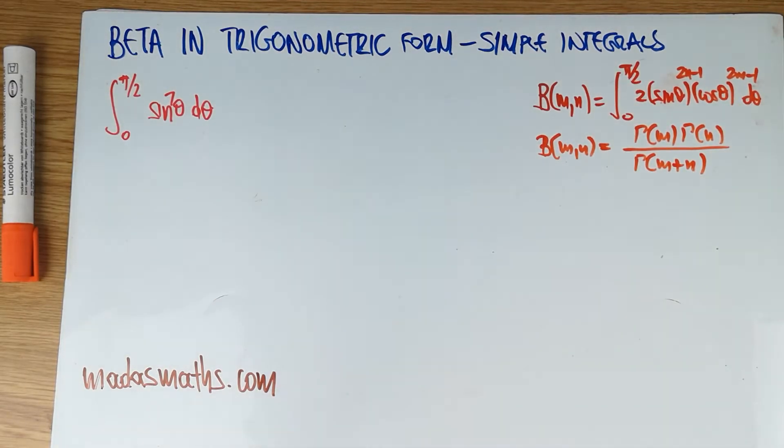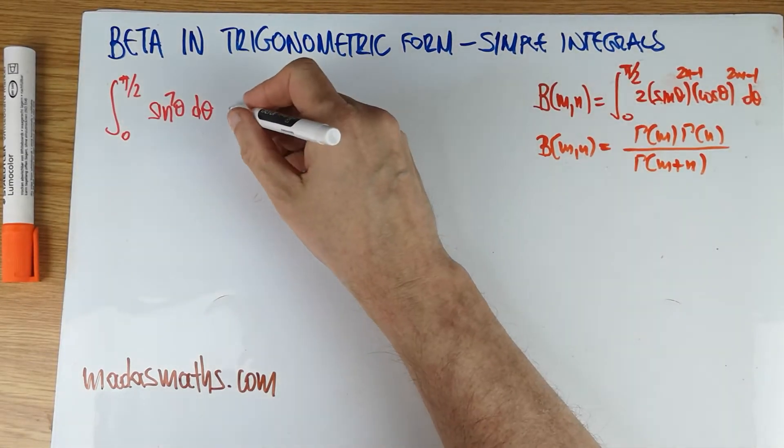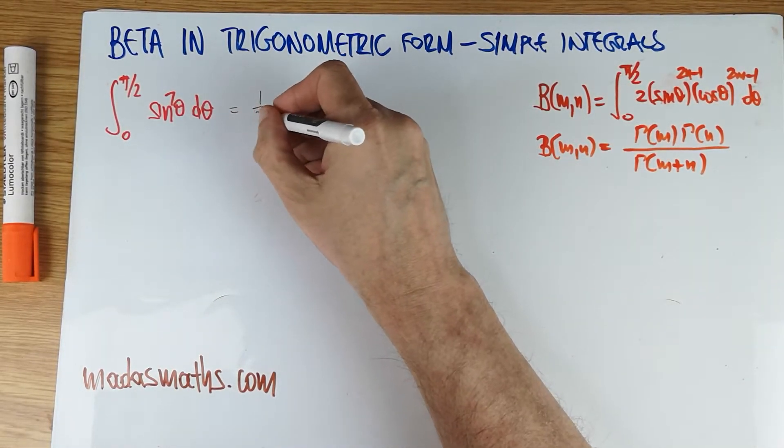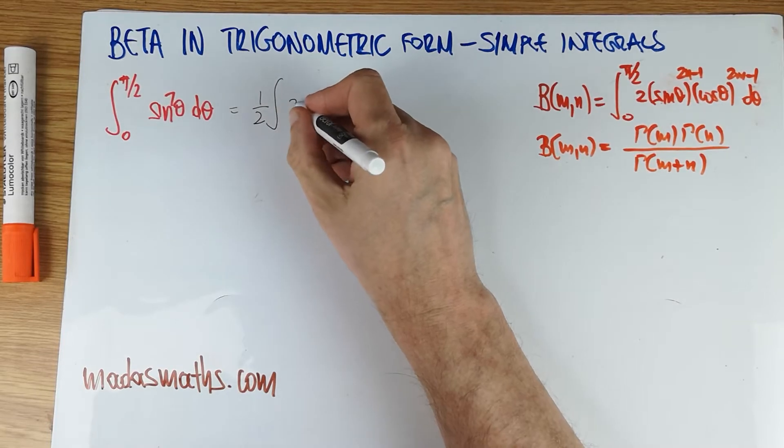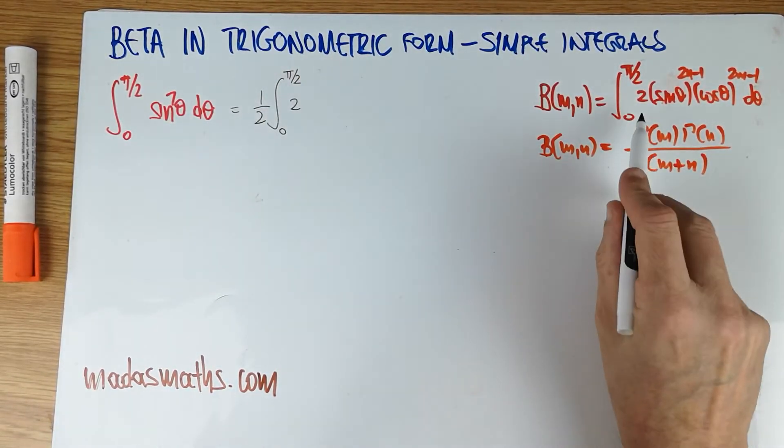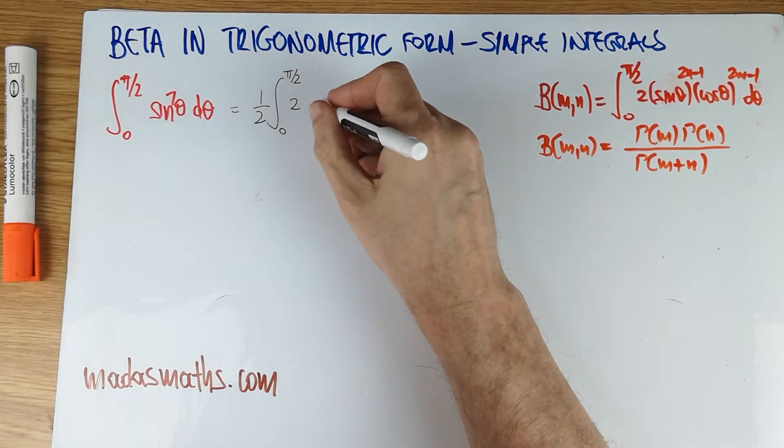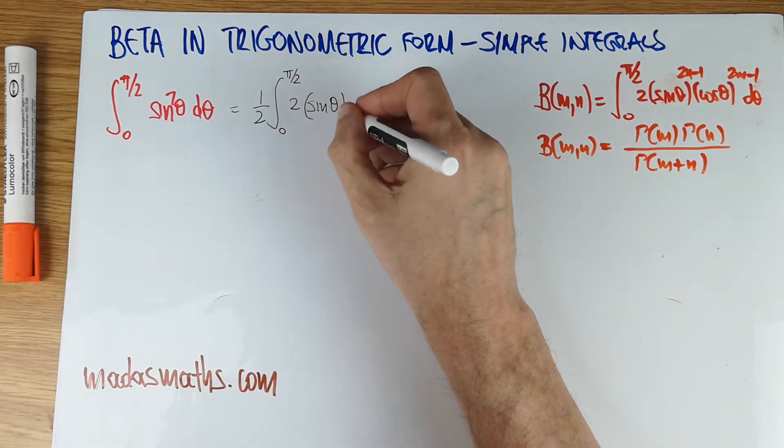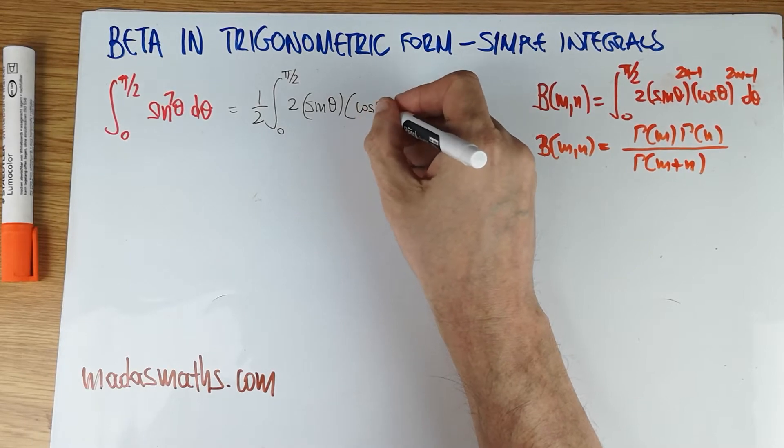So this particular integral, in order to do it the standard way, is actually quite a nightmare because you will either need complex numbers or some kind of reduction formula. With the beta function, you just do it in a few lines. So here it is. We're going to write, first of all, as a half, put the 2 on the inside, as the 2 from this bit here. And then I'm going to write the sine of theta and a cos of theta.